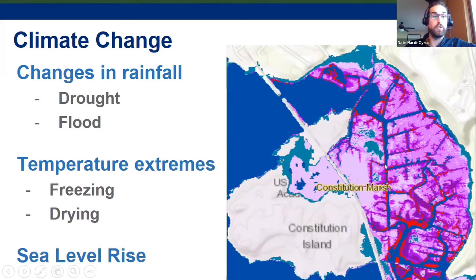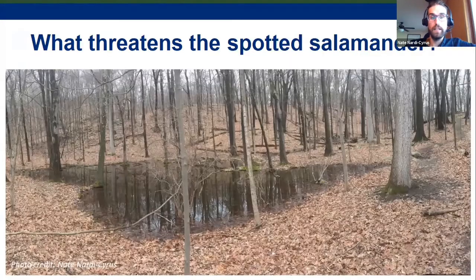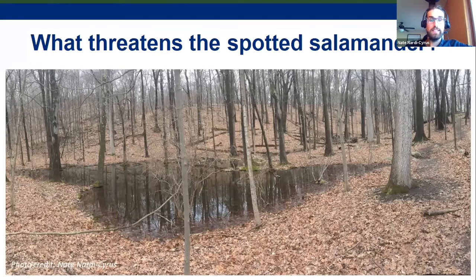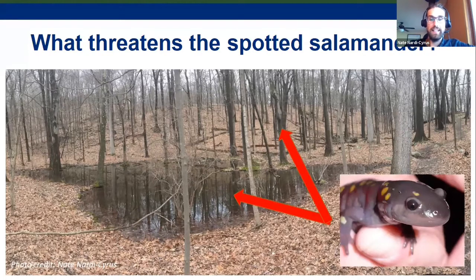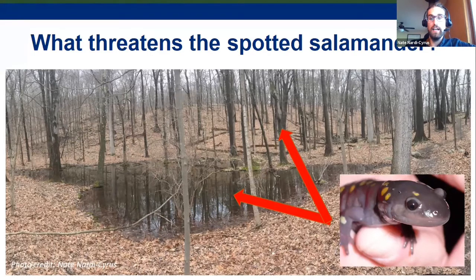To end this threats section, I'll take it down to the individual species level, because understanding what threatens a wetland is understanding what threatens its inhabitants. We'll look at what threatens the spotted salamander. I've talked a lot about vernal pools or intermittent woodland pools in this talk, so we'll look at a potential series of threats that could harm this species.